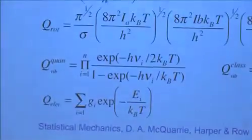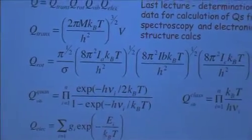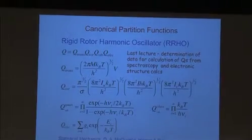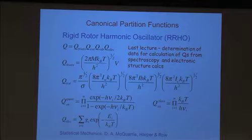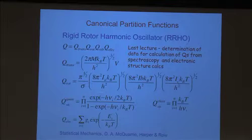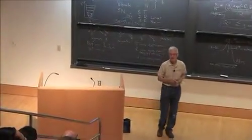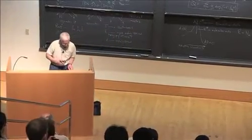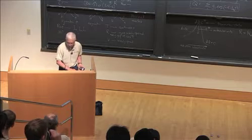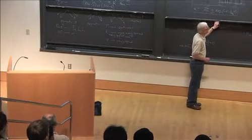Here are the expressions for rigid rotor harmonic oscillator. The total partition function Q is made up of translational, rotational, vibrational, and electronic contributions. Here's the expression for the translational partition function. Here's the rotational partition function, which depends upon the moments of inertia — that should be I subscript B. The vibrational partition functions depend upon the vibrational frequencies. The parametrization of these motions is in terms of the moments of inertia and the vibrational frequencies.